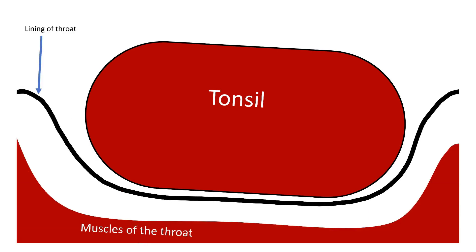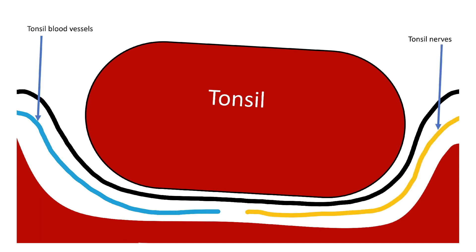This black line represents the lining of the throat, and quite deep to that are some of the muscles in the throat which help you to swallow things. In between the lining of the throat and the muscles of the throat, there are lots of blood vessels and lots of nerves. Both of these are very important with regard to this operation.